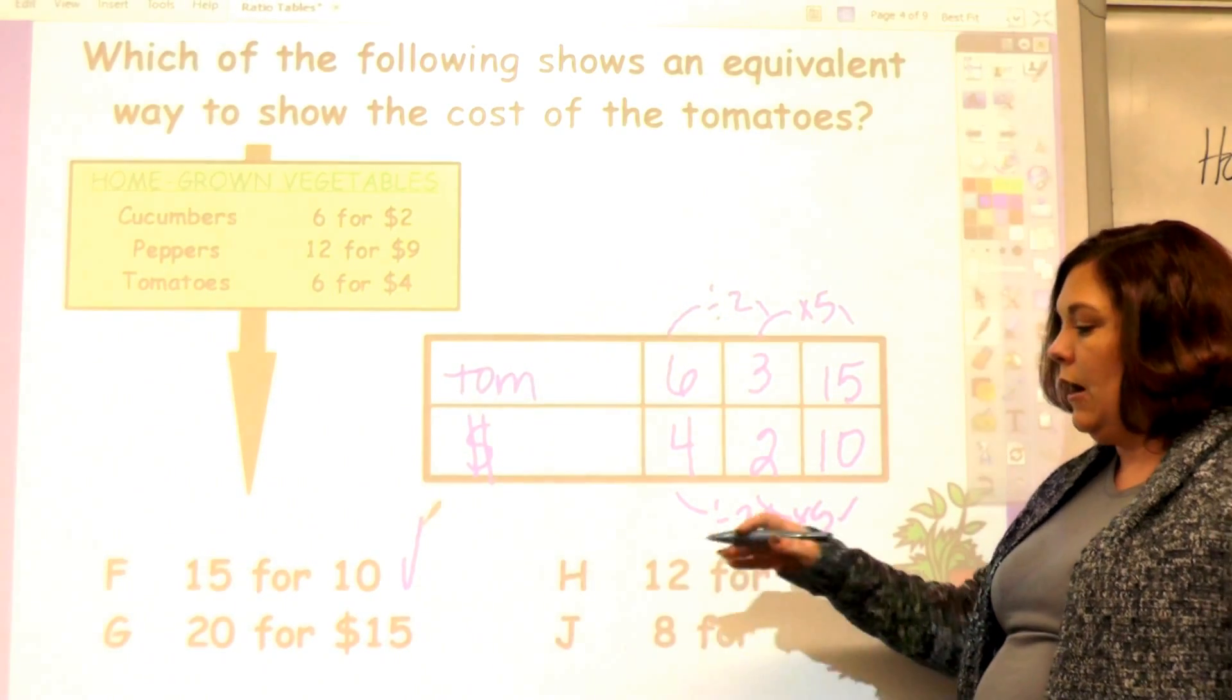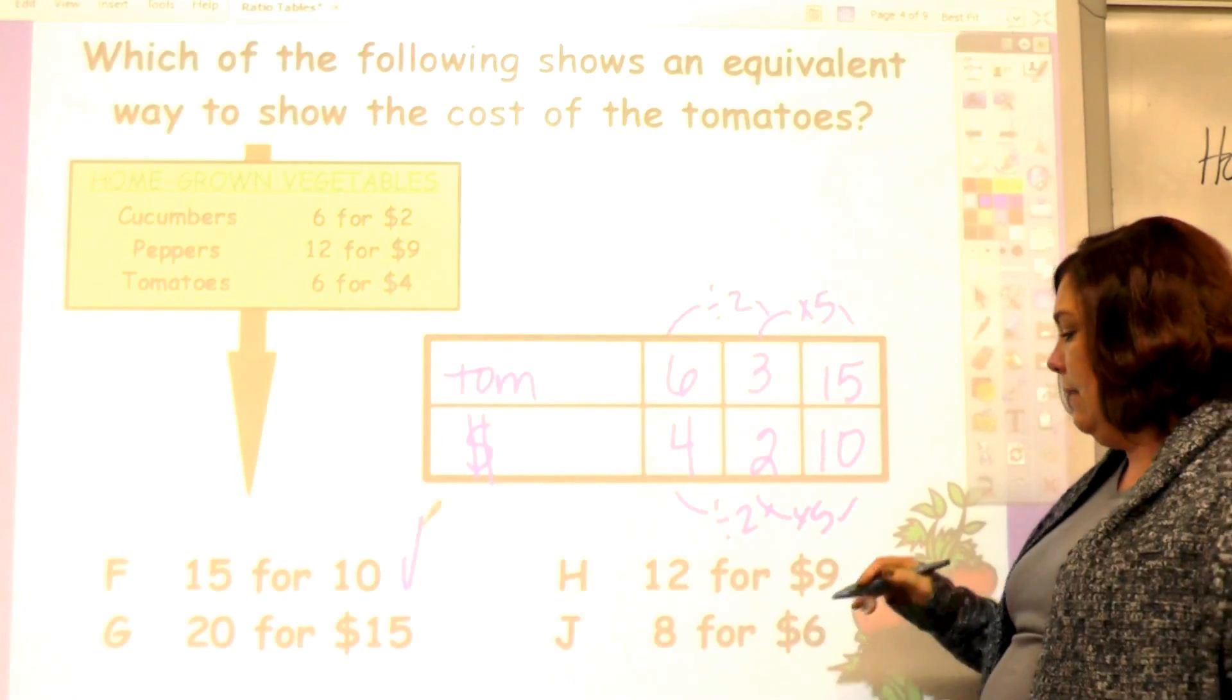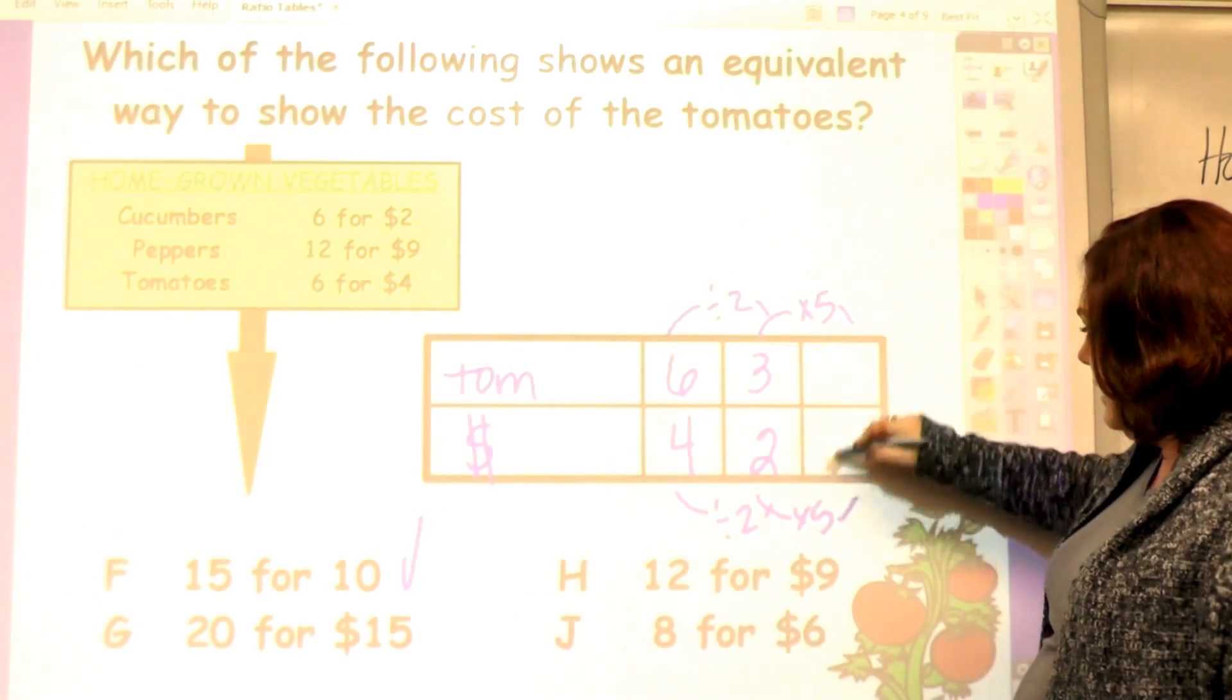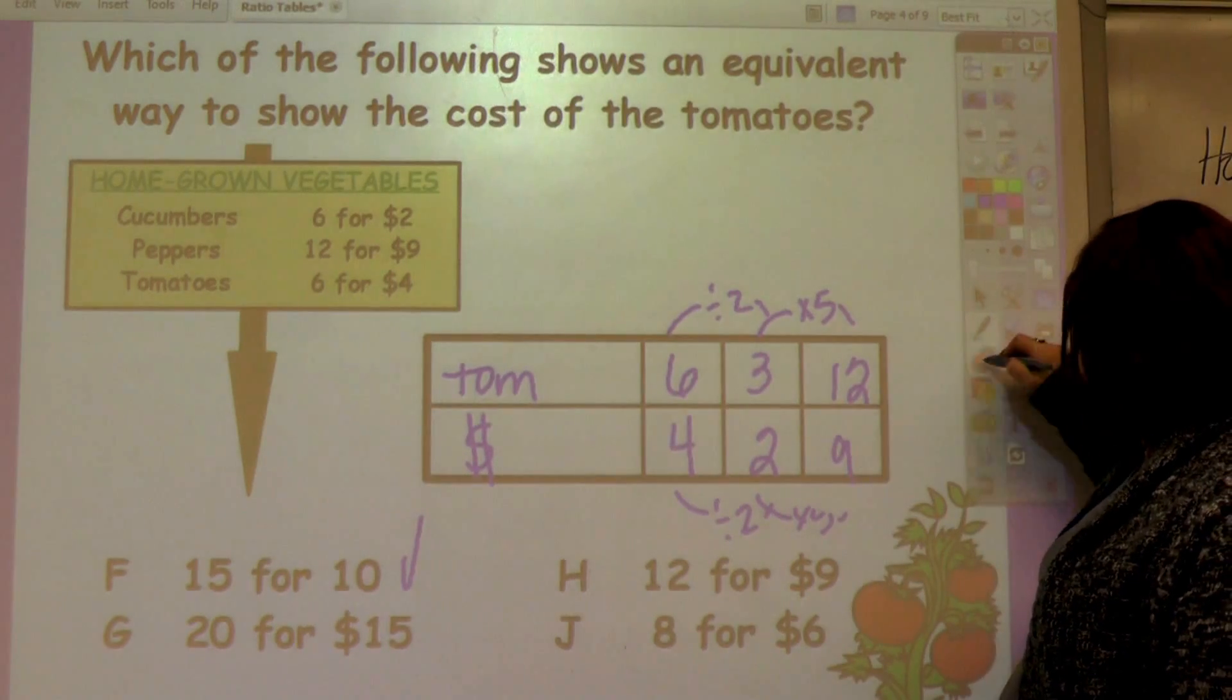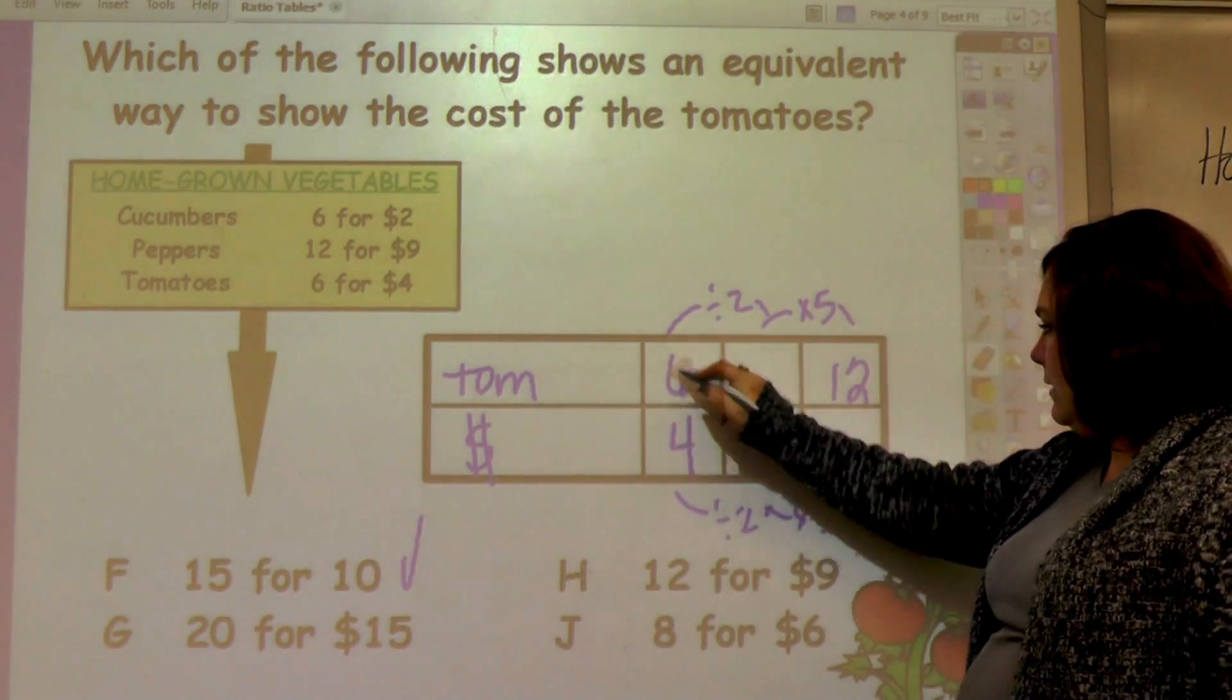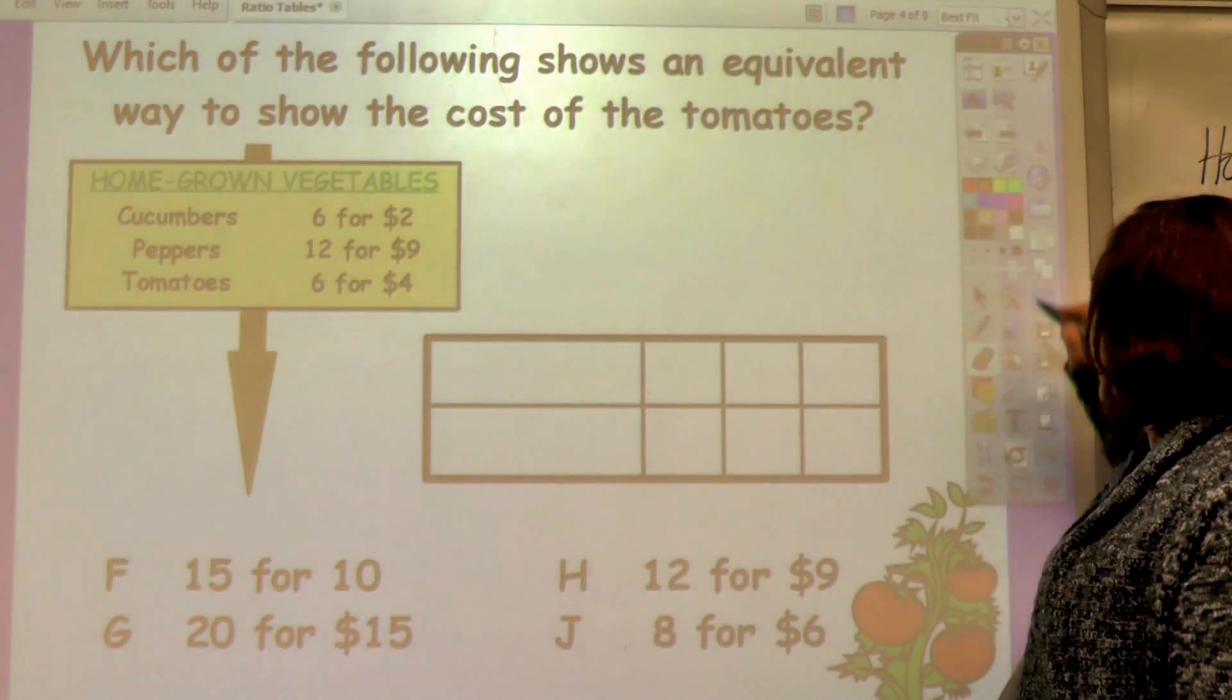If that wasn't the answer I would put in each of these into the box and see if it would work. For instance, this is 12 over 9, and this is times 2, but this is not times 2, so that one doesn't work.